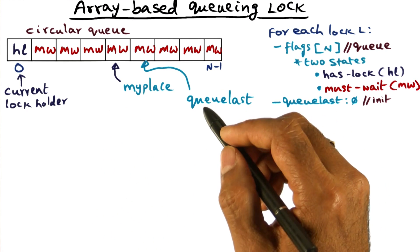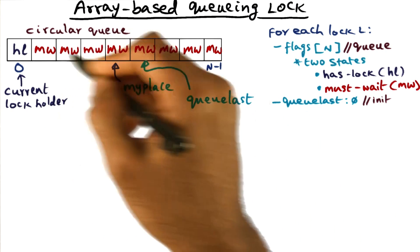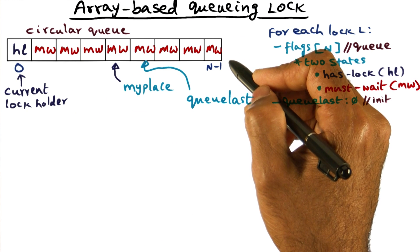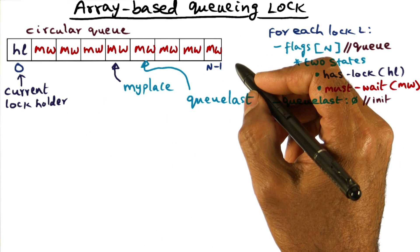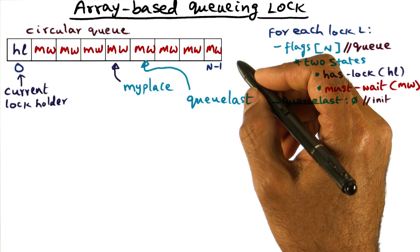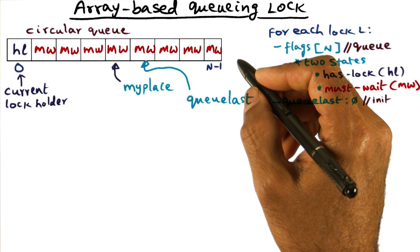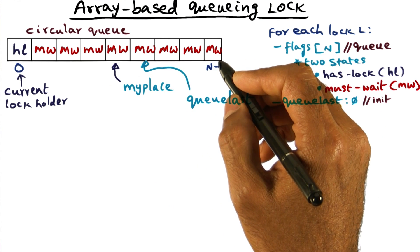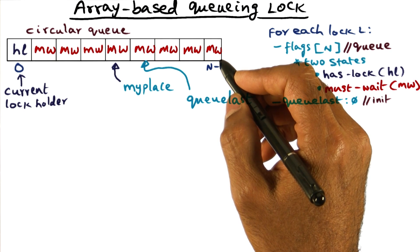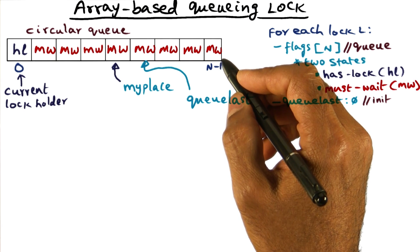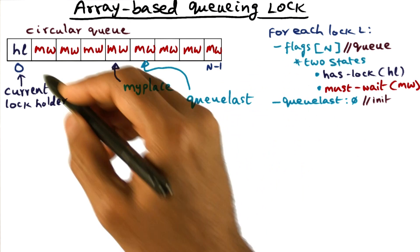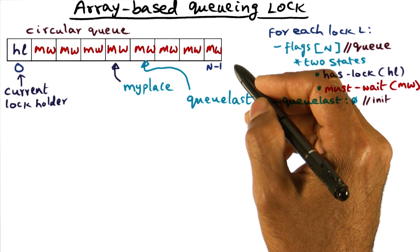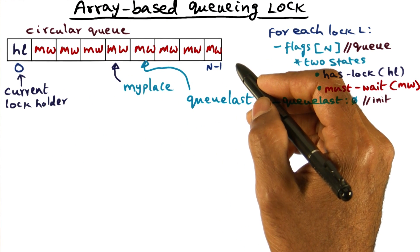Now the important point I want you to notice is that since the array size is n, and the number of processes is n, nobody will be denied. Everybody can come and queue up waiting for this lock. Because since there are n processors, at most n simultaneous requests can be there for that lock, and everybody will get their unique spot to wait for, if in fact the lock is currently in use.